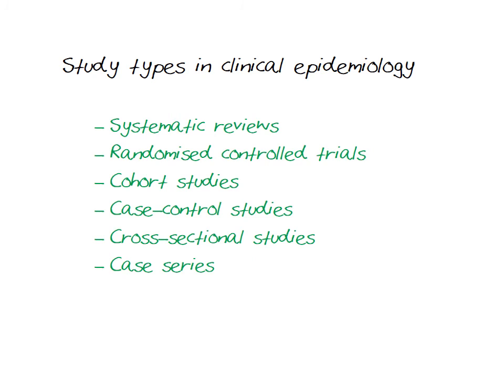Here is a list of study types that you will learn about in this module. They have been organised in order of the level of evidence they provide, with the highest level at the top being systematic reviews, followed by randomised controlled trials, and then different types of observational studies. After you have learned about the main features of these different study types in the next couple of videos, we will revisit this hierarchy, as the order of study types according to level of evidence can change a little according to the particular clinical question you are asking.